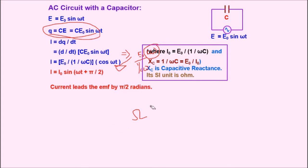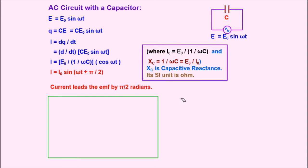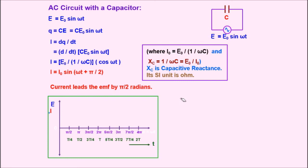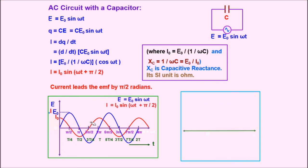For the phasor diagram with a capacitor circuit, taking x-axis and y-axis representing E and I: the current leads the EMF. If EMF starts from the origin, current starts one step ahead of EMF, that is a positive pi/2 phase difference. The red curve represents the current. In the linear graphical representation, the current phasor is at omega t plus pi/2. So in an inductive circuit, current lags behind EMF, while in a capacitive circuit, current leads EMF by pi/2 radians.